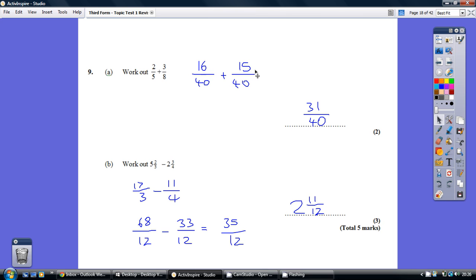Now we can just add the top numbers, 31, but remember the common denominator stays the same. It's 31 40ths, not 31 80ths.